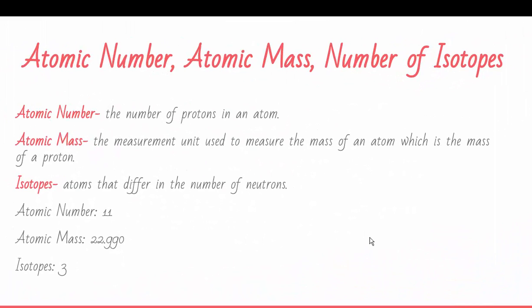Atomic number, atomic mass, number of isotopes. The atomic number is the number of protons in an atom. The atomic mass is the measurement unit which is used to measure the mass of an atom, which is also the mass of a proton.